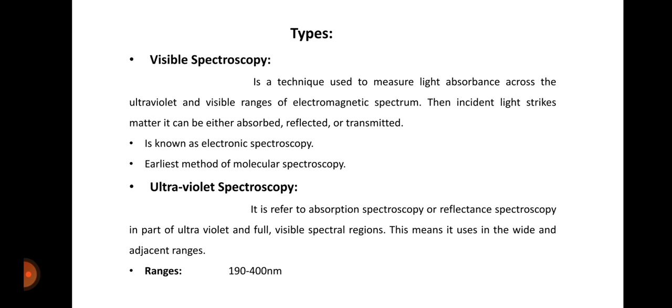The second type is ultraviolet spectroscopy. It refers to absorption spectroscopy or reflectance spectroscopy in part of ultraviolet and full visible spectral regions. This means it uses the visible and adjacent ranges. It ranges from 190 to 400 nm.